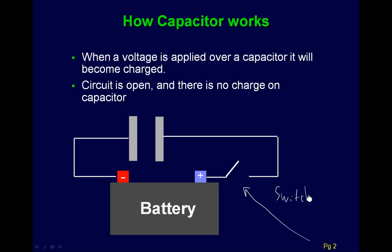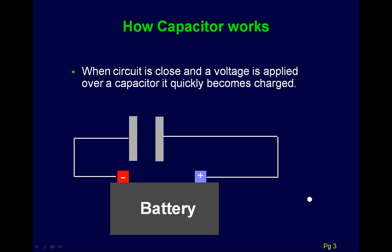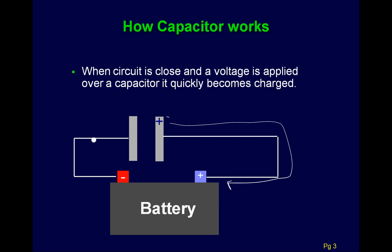We have a battery — we talked about batteries last time — and a capacitor is just literally two pieces of metal next to each other. In this metal you have free electrons, and so when you close the switch, an electron now has a path to get over to the positive side, which it wants to do. That leaves behind a positive charge in that piece of metal.